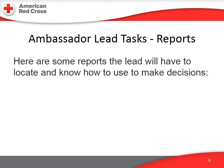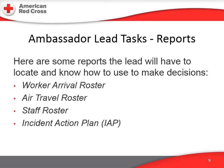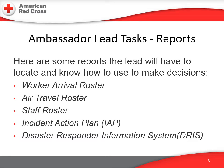Before the Ambassador Lead can complete many of those tasks, the Lead must have information about the arriving workforce. Knowing how many workers are arriving and their arrival locations is necessary for planning. Leads should review the air travel and arrival roster to determine the locations and times of responders' arrivals. The Staff Roster may tell you where the largest congregation of workers may be, like in hotels or staff shelters. Reading the current Incident Action Plan, or IAP, will help the Lead follow the scale and scope of the disaster operation. The Ambassador Lead will need to know where to access and how to filter the first three reports in Volunteer Connection.